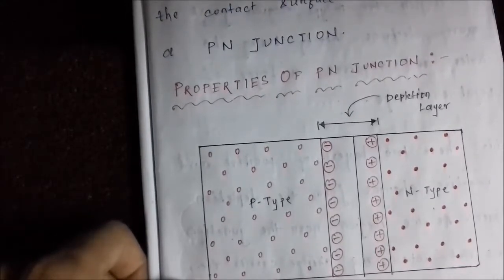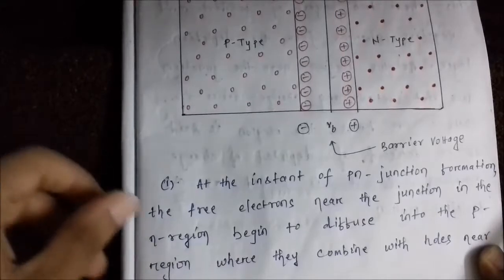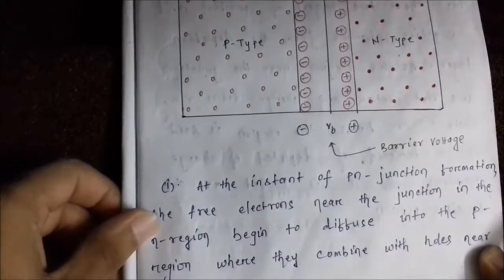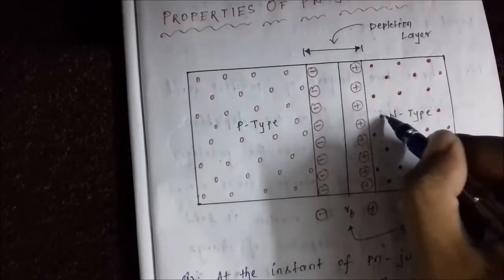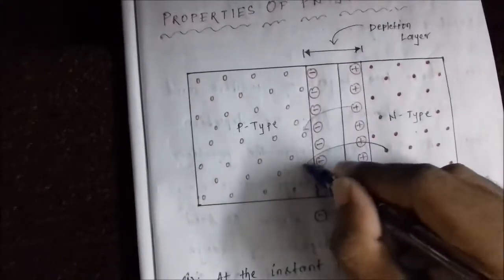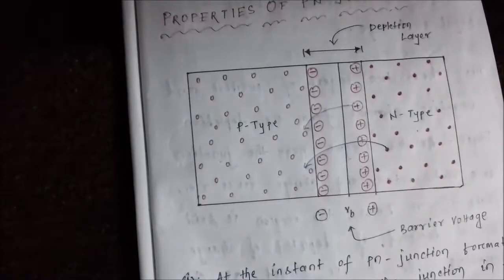Now let us discuss some properties of a PN junction. The first property is that when the PN junction is formed — when the two materials are joined together — at that instant, the electrons from the N type region diffuse into the P type region and combine with the holes in the P type region.